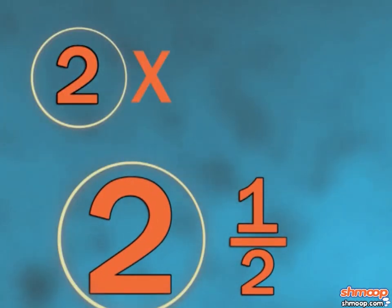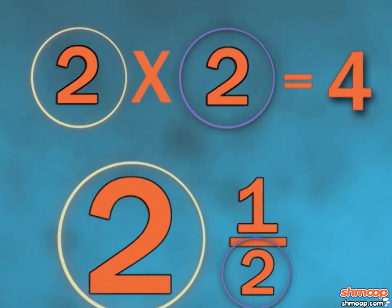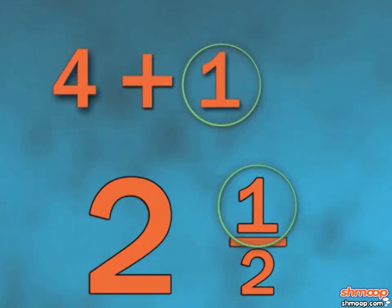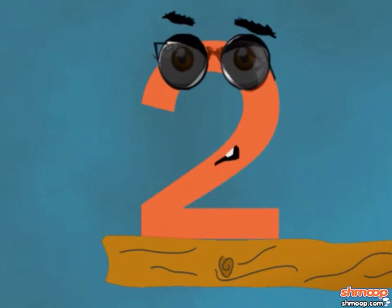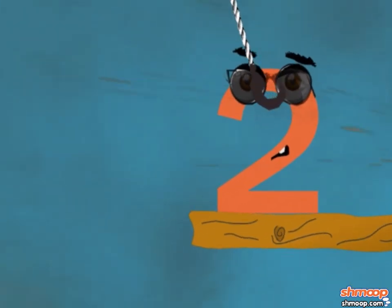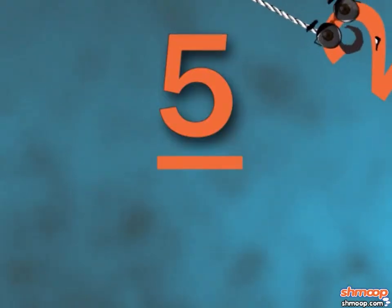First, we multiply the denominator by the whole number. Once we find that product, we add it to the numerator of our mixed number's fraction. Then we put that number all over the original denominator to get our improper fraction.